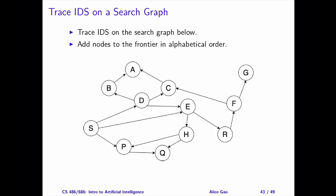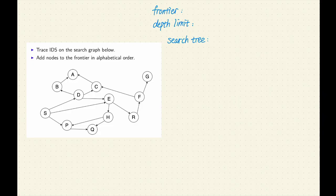The best way to understand IDS is to trace the algorithm on a search graph. Let's consider the same search graph. I will add nodes to the frontier in alphabetical order. While executing the algorithm, I will keep track of the depth limit, the frontier, and the search tree. Start with a depth limit of 0.